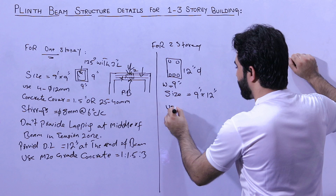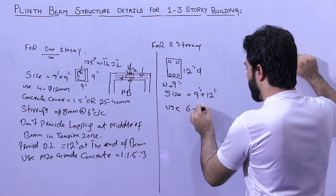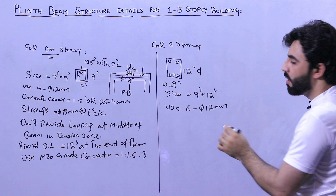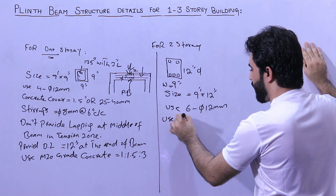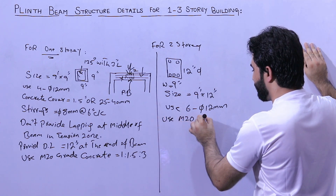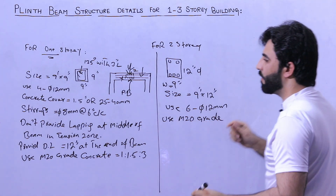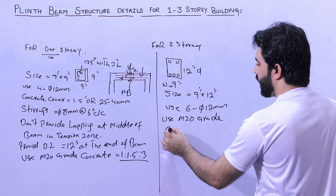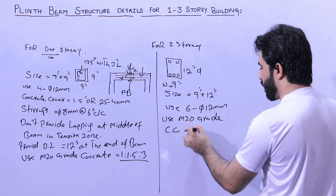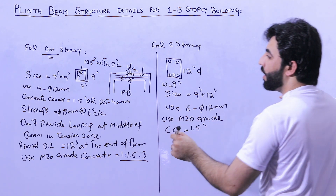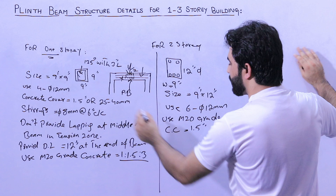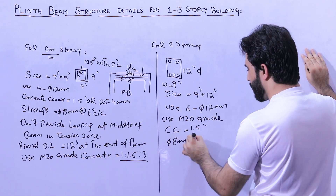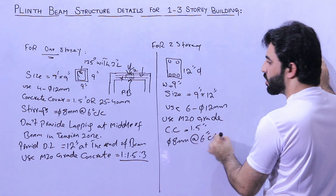Use six bars with diameter not less than 12 millimeter. Use M20 grade concrete with the same ratio already discussed, and concrete cover should not be less than 1.5 inches. For stirrups, use eight millimeter diameter with the spacing of six inches center to center.